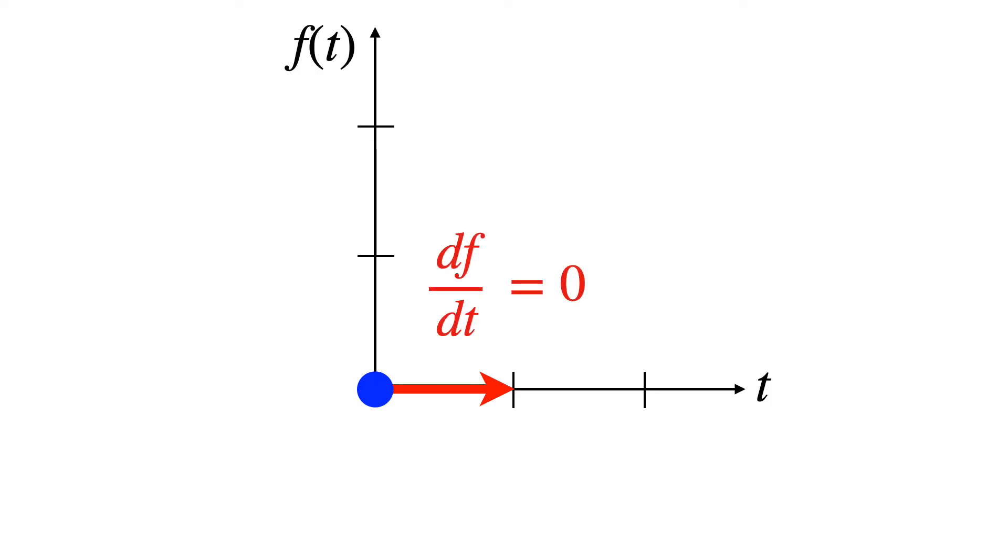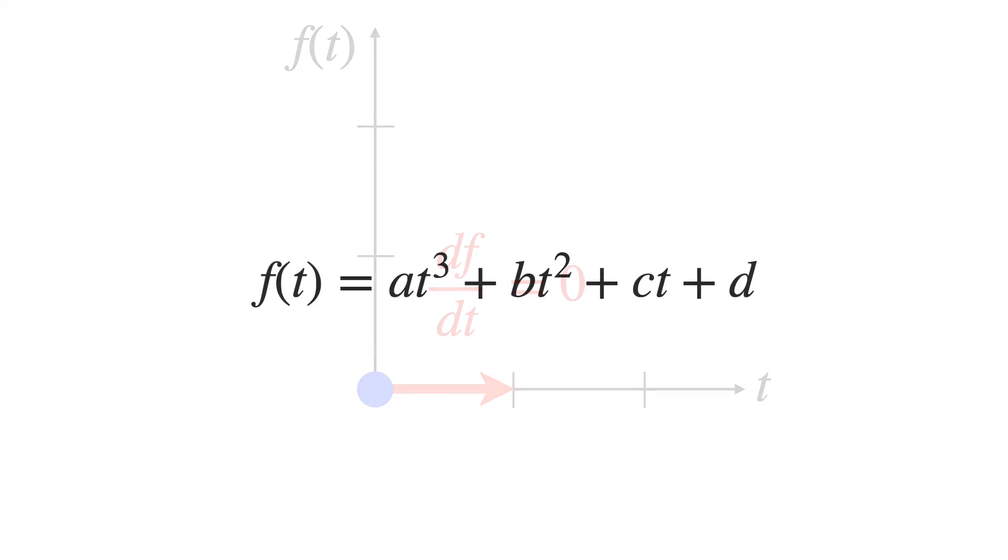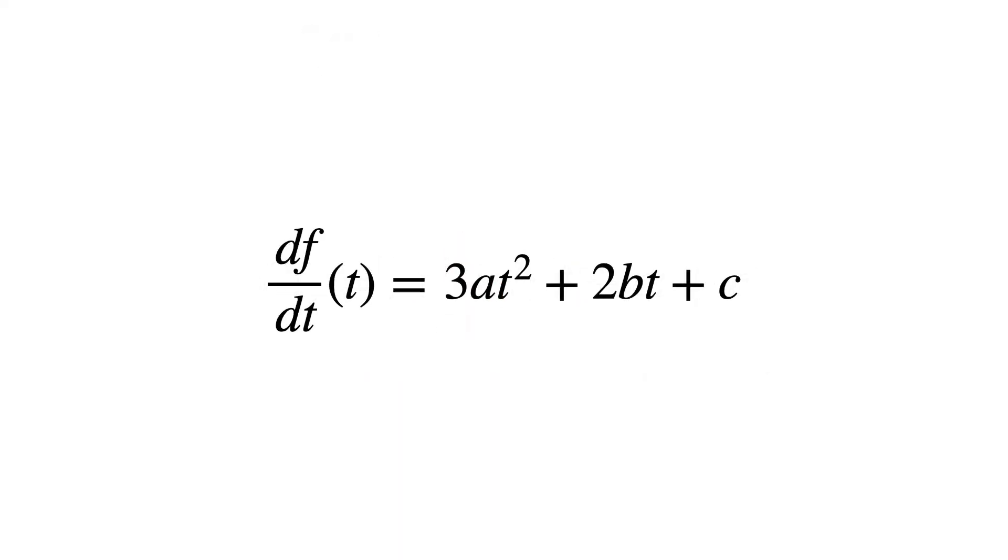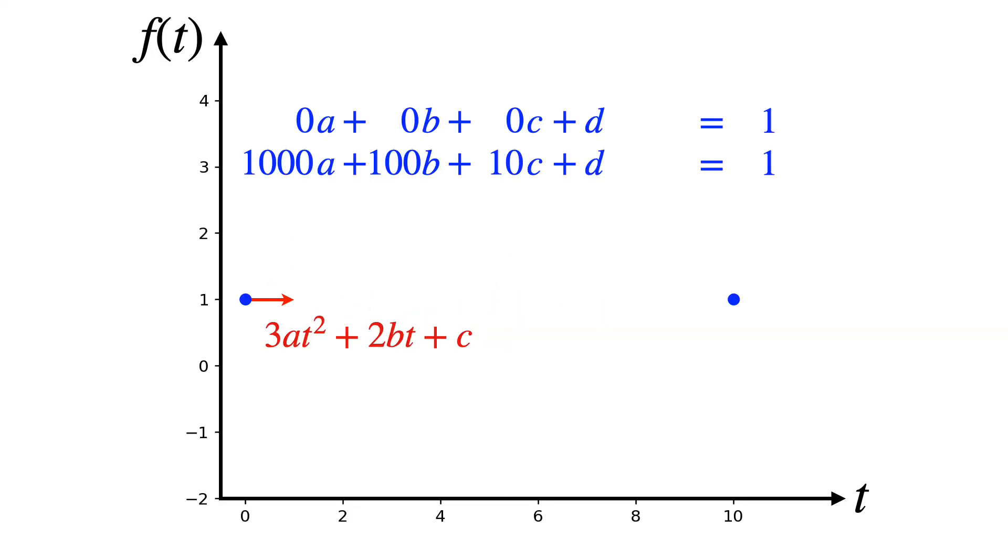So how do we write a derivative constraint? Well, recall our cubic equation. Let's just take the derivative. Now we can constrain it the same way that we do point constraints. We'll evaluate the derivative at the moment in time when it's active, 0 in this case, and set its desired value, also 0 for a horizontal tangent. Now we'll reformat to match the other constraints. And we repeat this for the other tangent constraint.